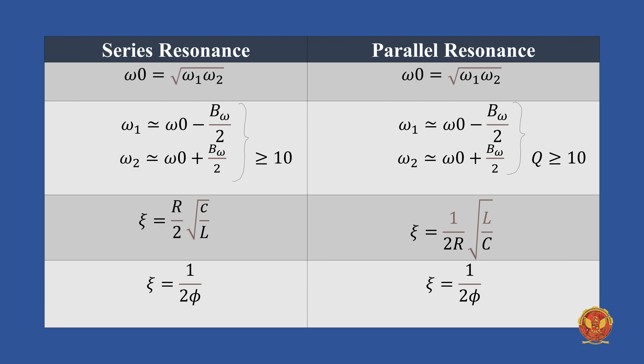Similarly, the damping factor Zeta in series resonance is R/2 times the square root of C/L. Replacing R by 1/R and C by L, Zeta in parallel resonance becomes 1/(2R) times the square root of L/C.